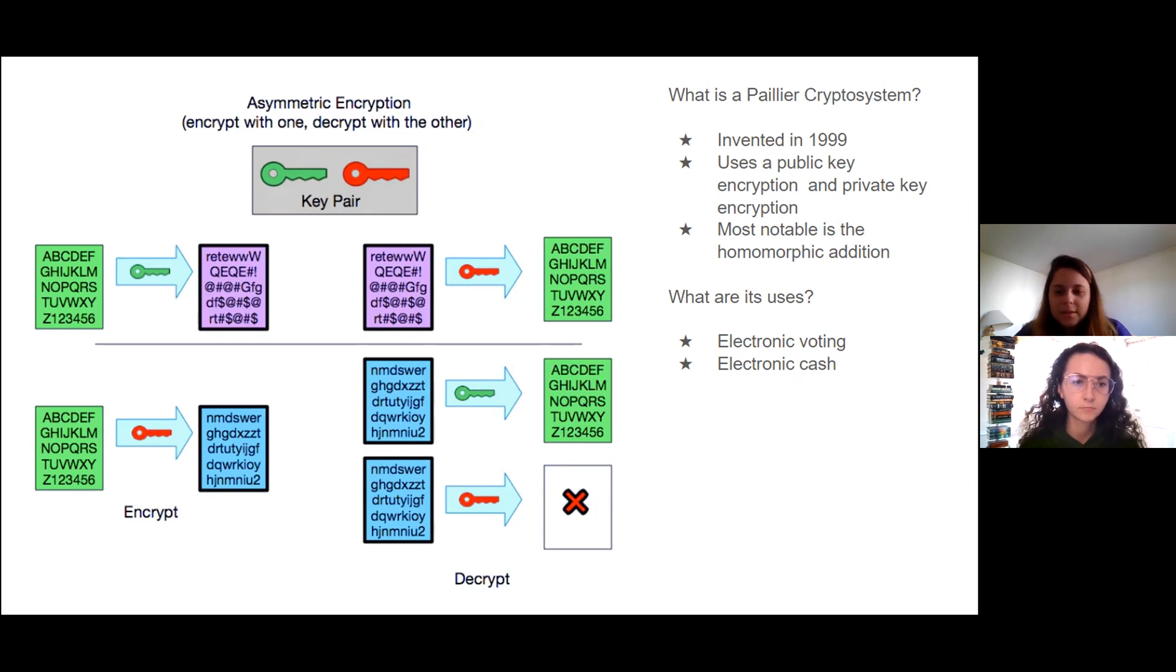The Paillier Crypto system was named after Pascal Paillier, who invented it 22 years ago. The homomorphic encryption properties of the Paillier Crypto system define it. Homomorphic encryption is a form of encryption that allows a person or a computer to perform computations on the data without decrypting it, aka having the private key.